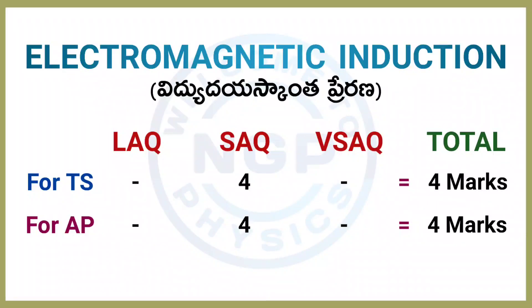Next chapter: Electromagnetic Induction. For both AP and TS students, one SAQ — one 4-marks question. Chapter weightage is 4 marks.